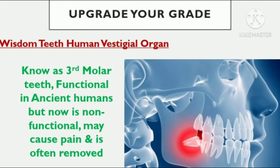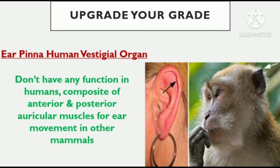The third important human vestigial organ is wisdom teeth — the third molar teeth. As we all know, the dietary pattern of modern humans has changed. Now we are behaving as omnivorous organisms, consuming all types of food. These third molar teeth may cause pain and can be removed surgically. They are even harmful to the extent where surgical procedures are often performed to remove them.